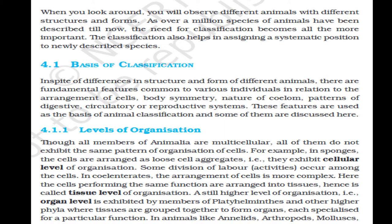Section 4.1.1: Levels of Organization. Though all members of Animalia are multicellular, all of them do not exhibit the same pattern of organization of cells. For example, in sponges the cells are arranged as loose cell aggregates, i.e., they exhibit a cellular level of organization, and some division of labor occurs among the cells. In coelenterates, the arrangement of cells is more complex — cells performing the same function are arranged into tissues, hence it is called tissue level of organization. A still higher level, the organ level, is exhibited by members of Platyhelminthes and other higher phyla, where tissues are grouped to form organs each specialized for a particular function.